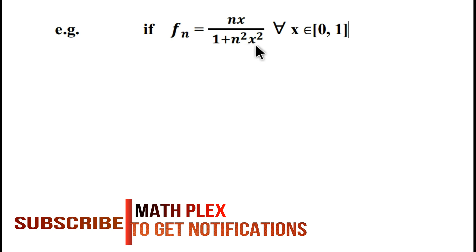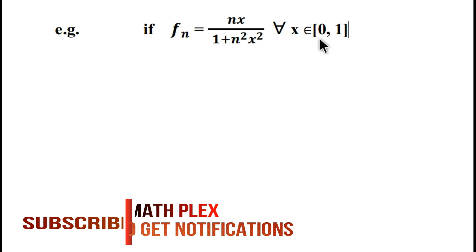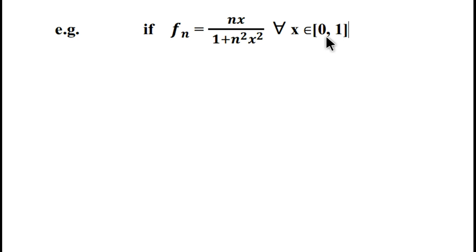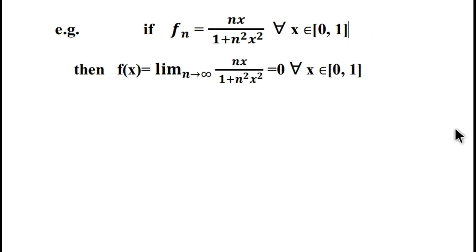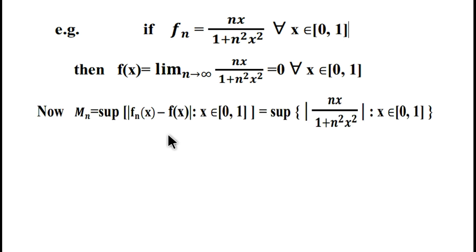Now to understand it, consider an example. Let f_n(x) = nx / (1 + n²x²). We will discuss its uniform convergence on the closed interval [0, 1]. Here f(x) = lim(n→∞) nx / (1 + n²x²), and you can easily check that it equals zero for each x in the closed interval [0, 1].